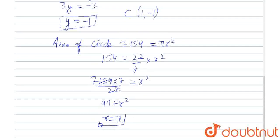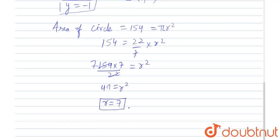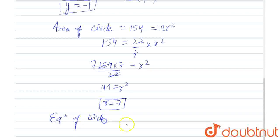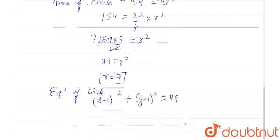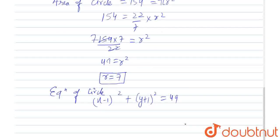So, r will be 7. And then we can put this in the final equation, which is the equation of the circle. So, the equation of circle will be x minus 1 whole squared plus y plus 1 whole squared equals 49, because 49 is r squared.